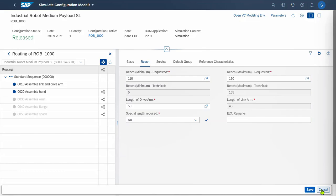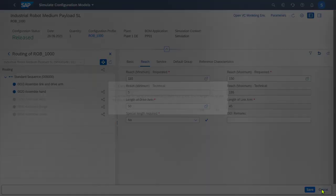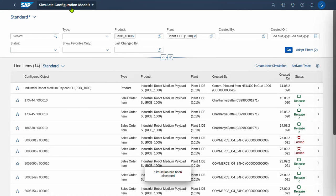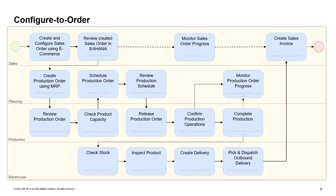So that's an example of the configuration simulator directly in S4HANA. Now let's move on to the rest of the demonstration where we look at the entire process of configure-to-order. We'll start with sales and configuring the sales order. In this process, as well as doing this within an e-commerce solution, we'll skip the options in grey for scheduling and capacity planning. Let's start by doing the configuration within our e-commerce solution and then reviewing the sales order created directly in S4HANA through the integration.